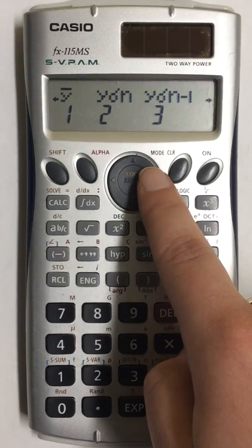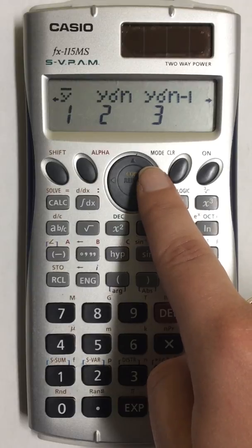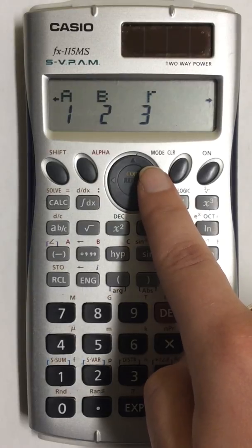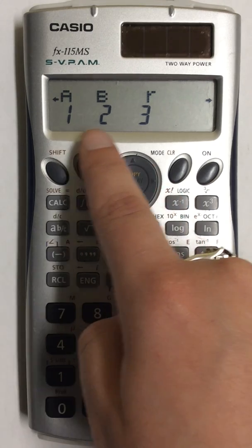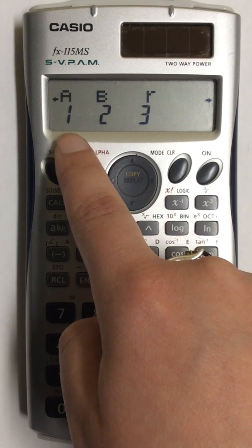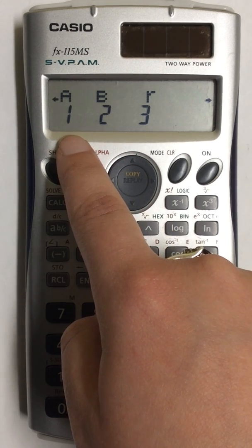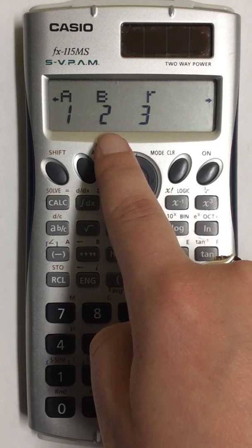You have values now that show for Y but press it one more time and now you have your values for a regression line A and B. A is going to be your Y intercept and B is going to be your slope.